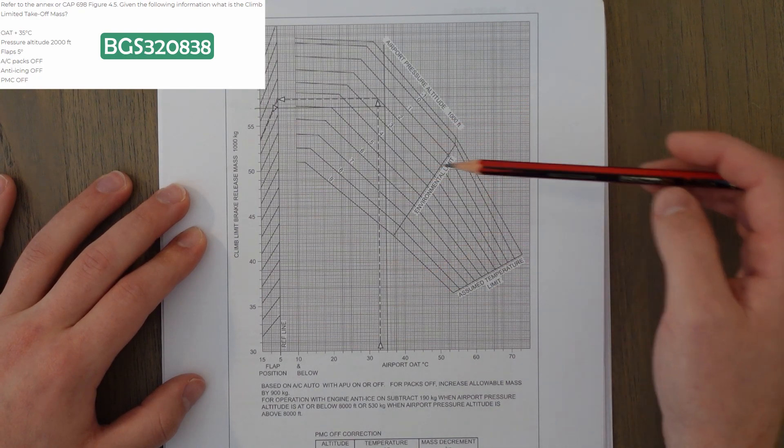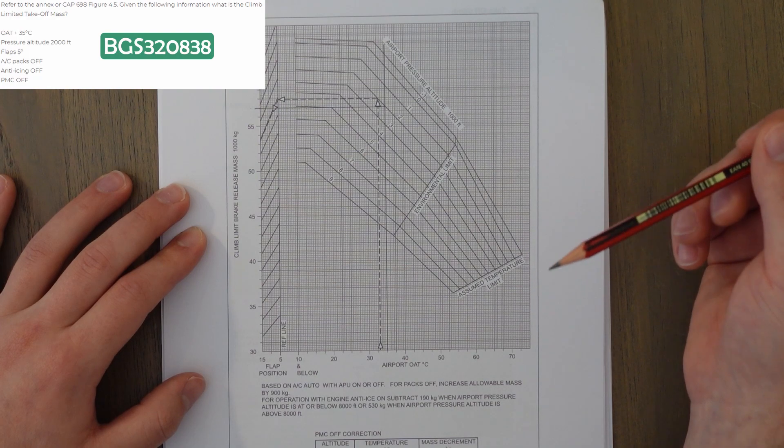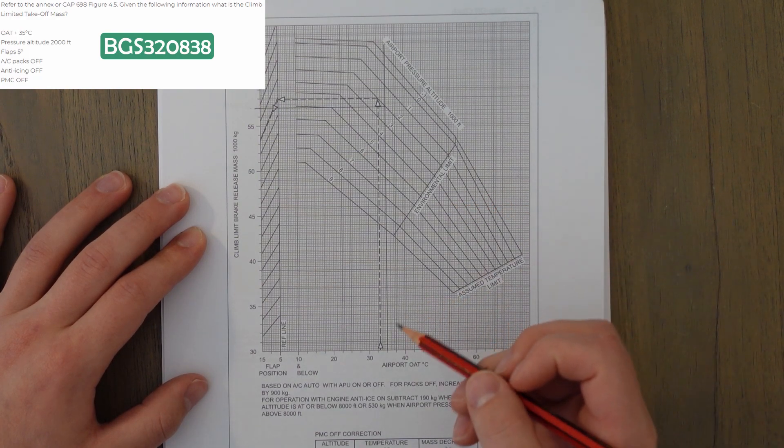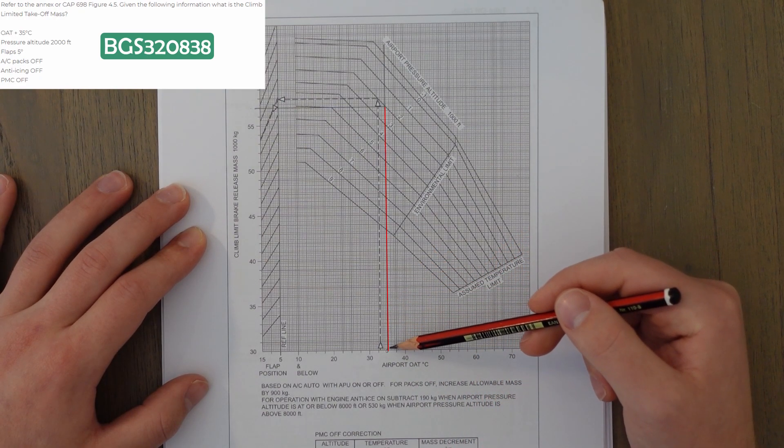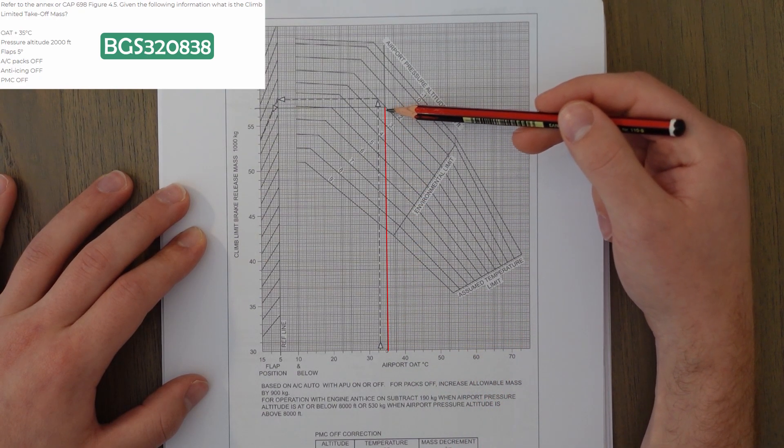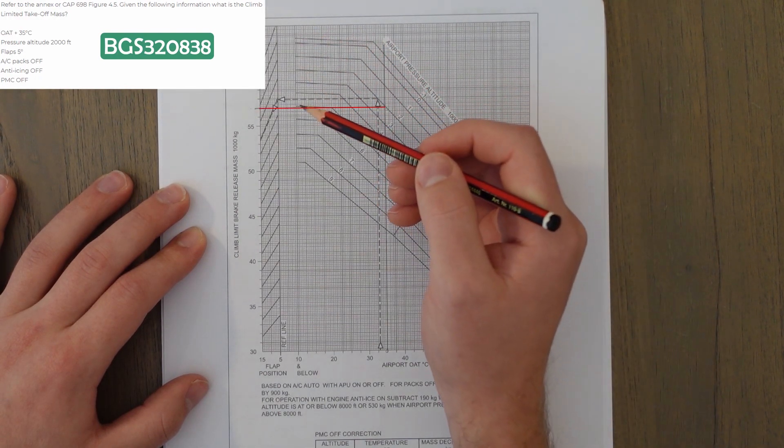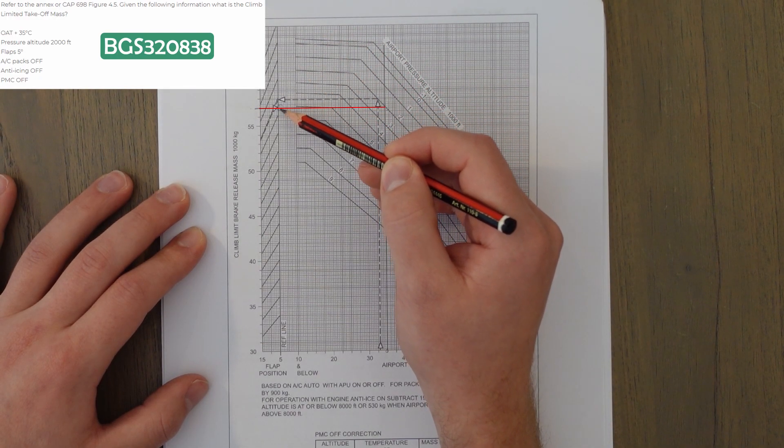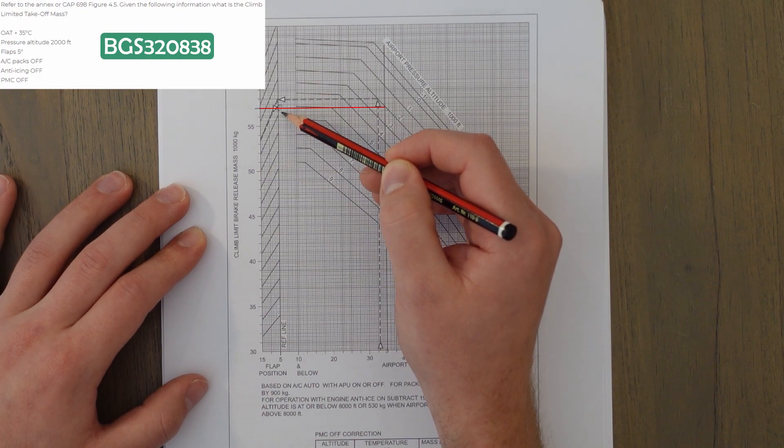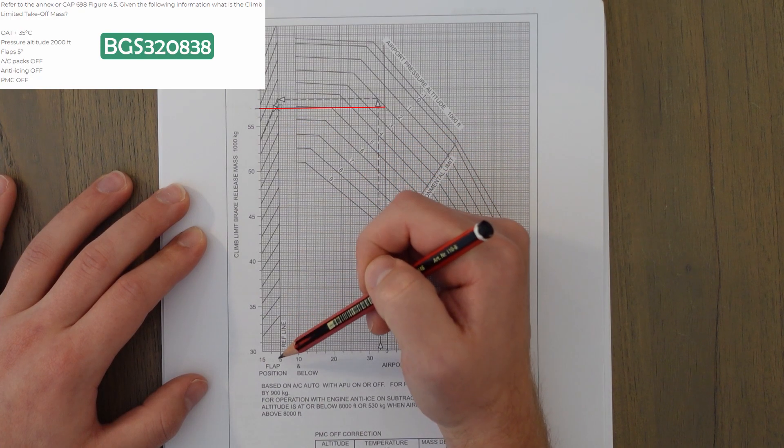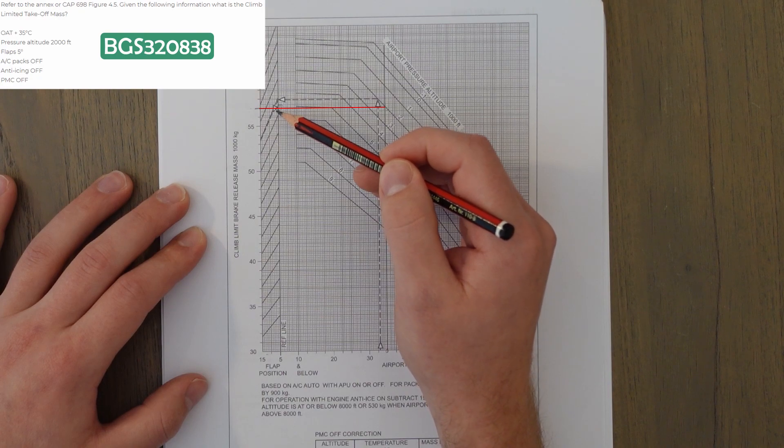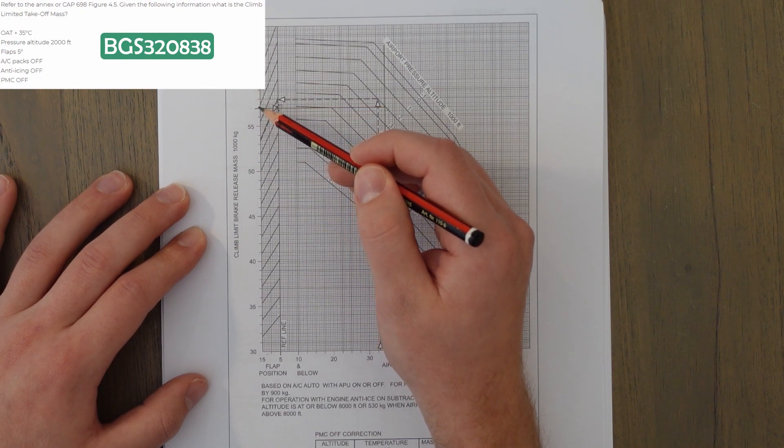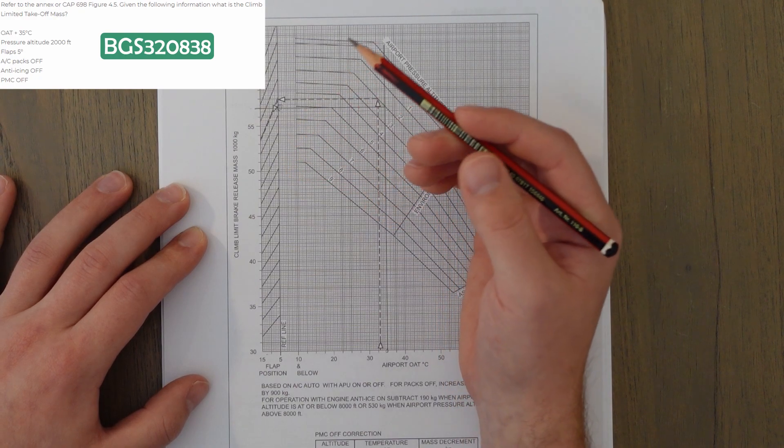So let's enter the information that we know. We've got 35 degrees C, which is here, and then we project all the way up to a pressure altitude of 2,000 feet, coming up to this line here. And then from 2,000 feet, we go across to this first reference line, which is this point here. We then have two options. We use flap 5 or we use flap 15 here. We're using flap 5, so we're not going to follow any guidelines. We're just going to go straight across for an answer of 57,000 kilograms exactly.